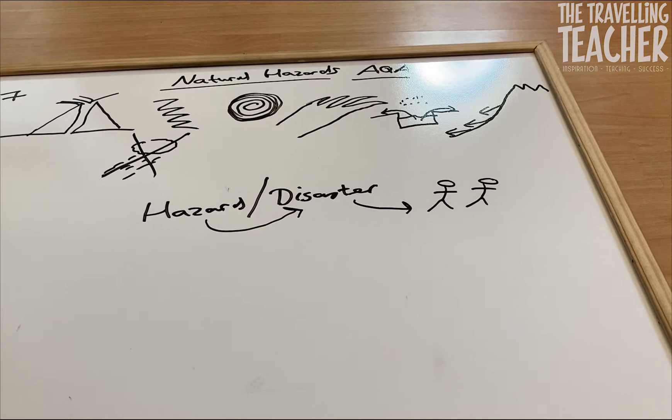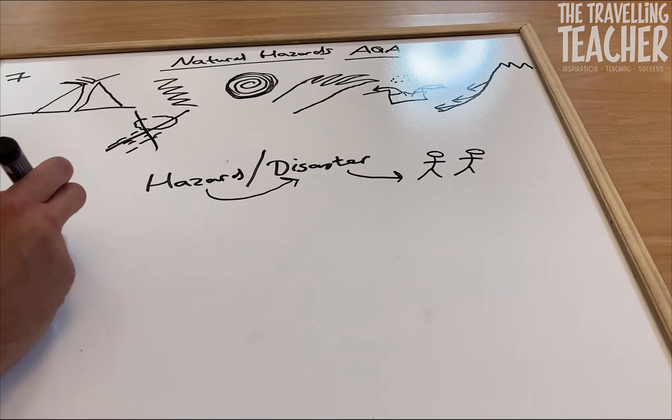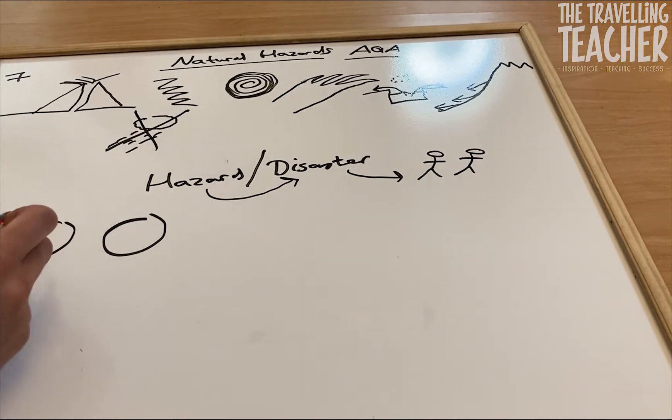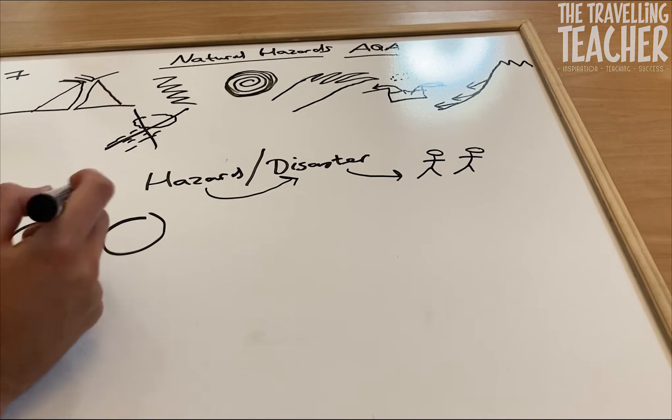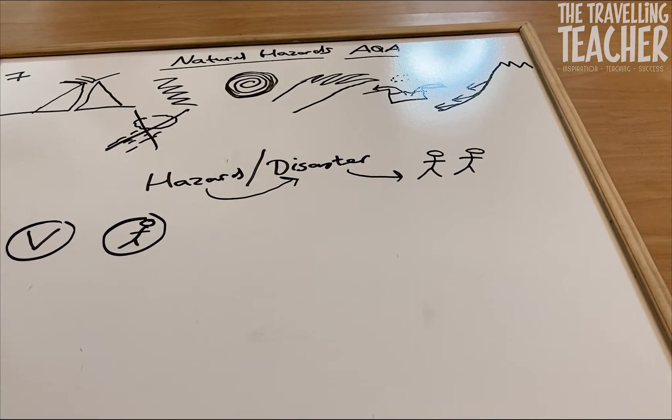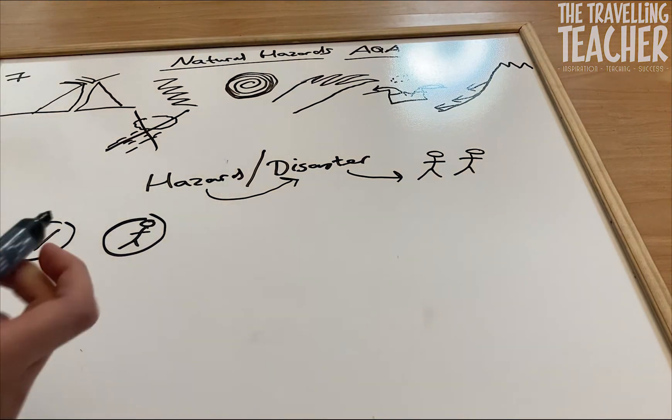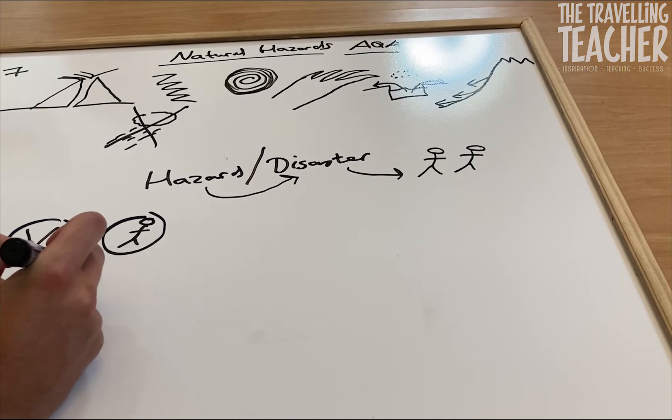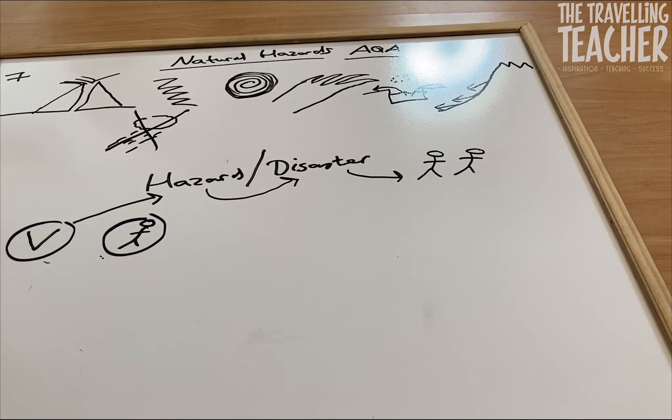So once people are impacted by one of these natural hazards that hazard then turns into a disaster. So if I was going to put that into a diagram format we could have two circles here. Now this first circle is representing, shall we say, let's say a volcano, and there's the population. Now if this volcano erupted in an area where there was zero population and nobody was impacted by that volcanic eruption, so there's no connection between the two, that volcano would be known as a hazard only.